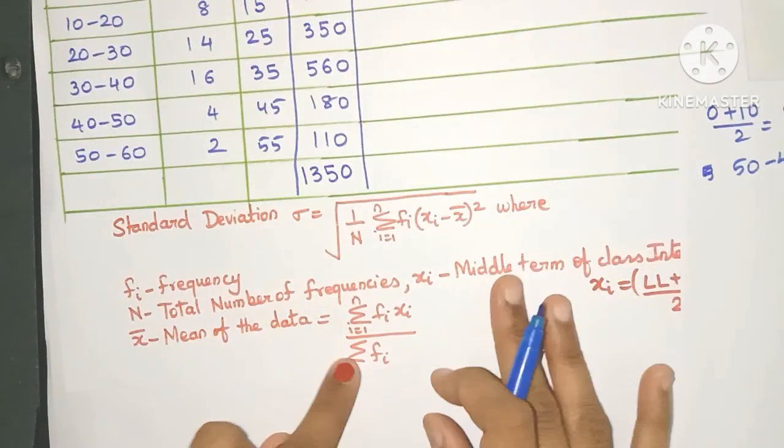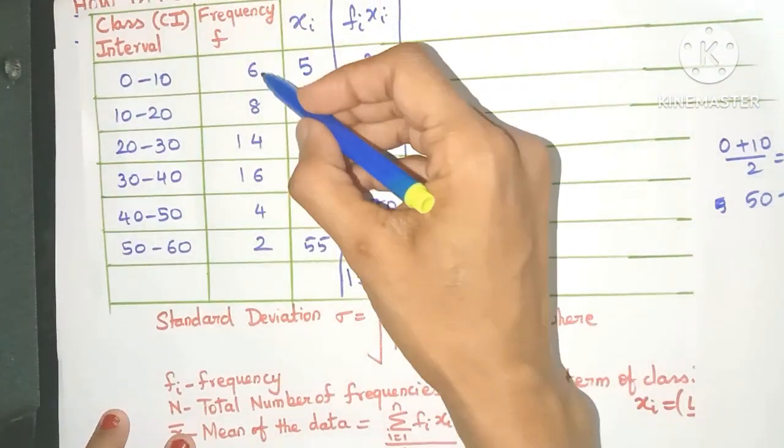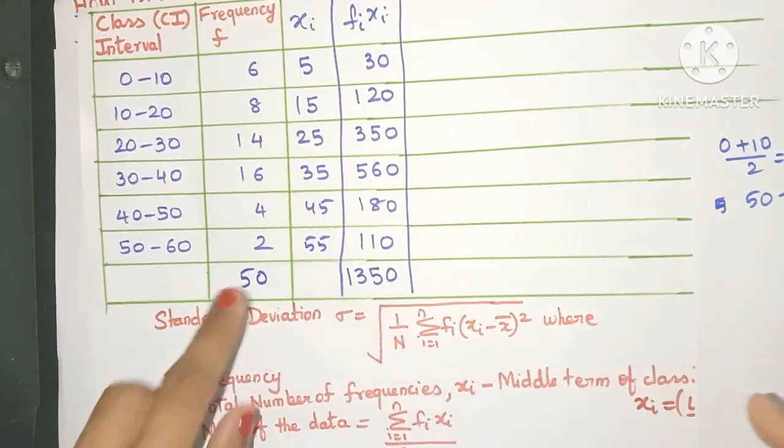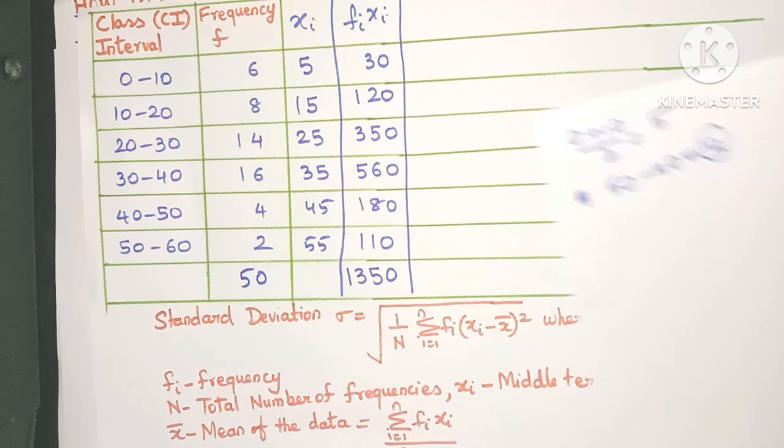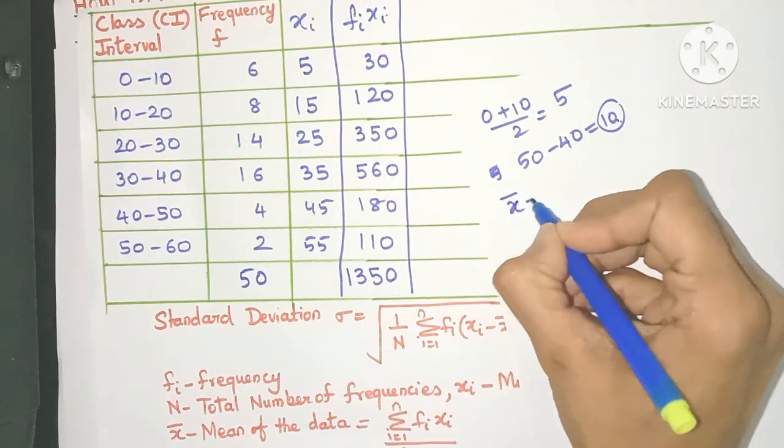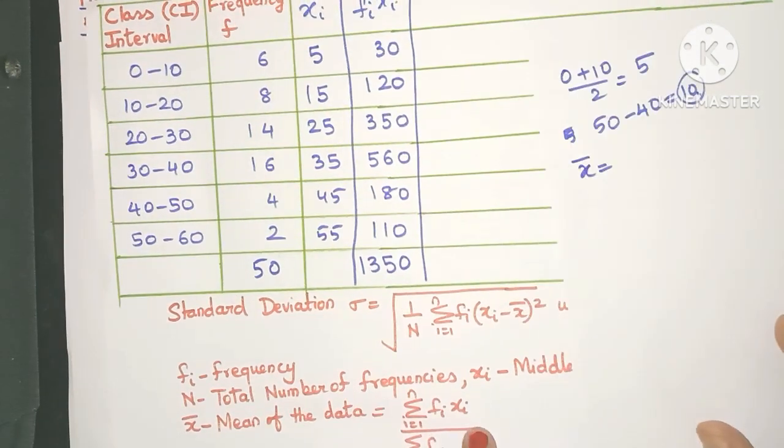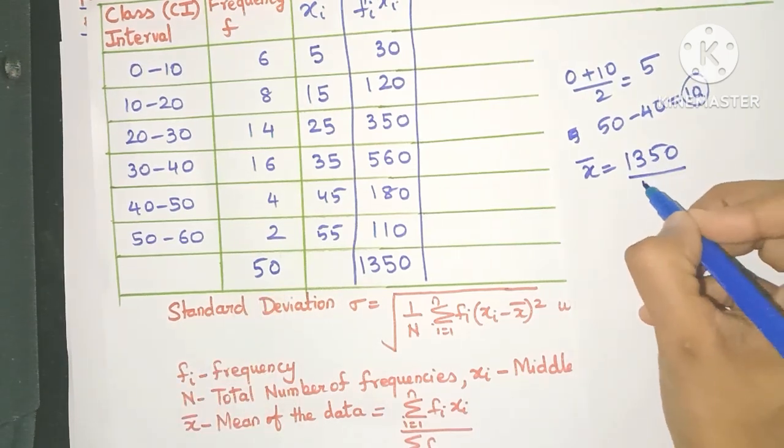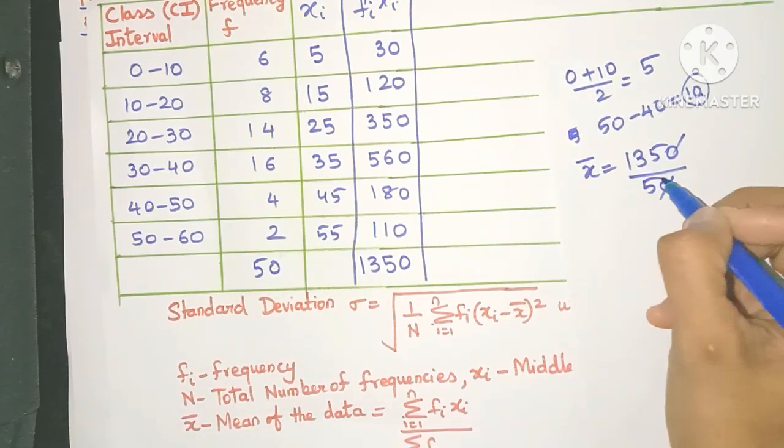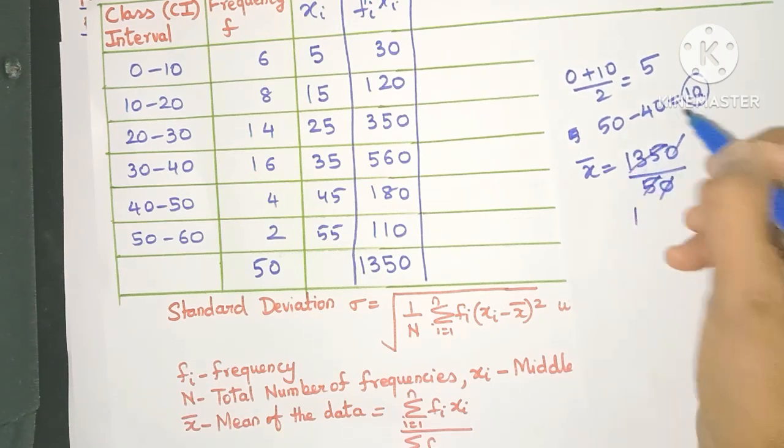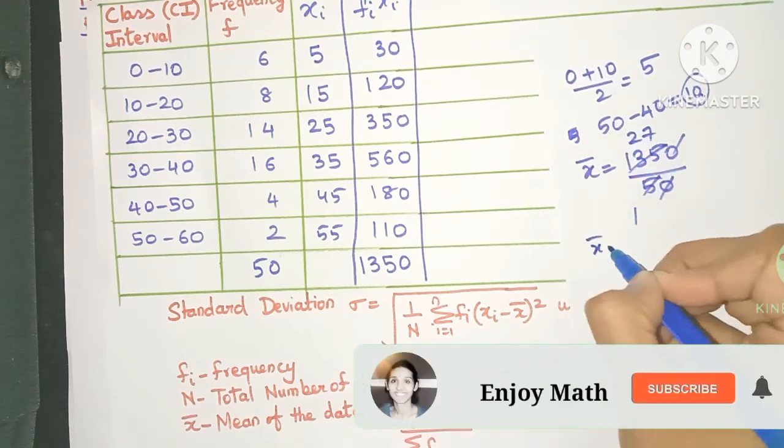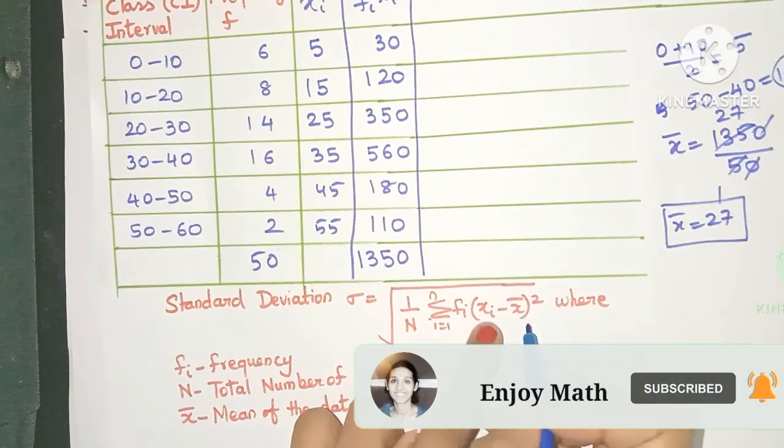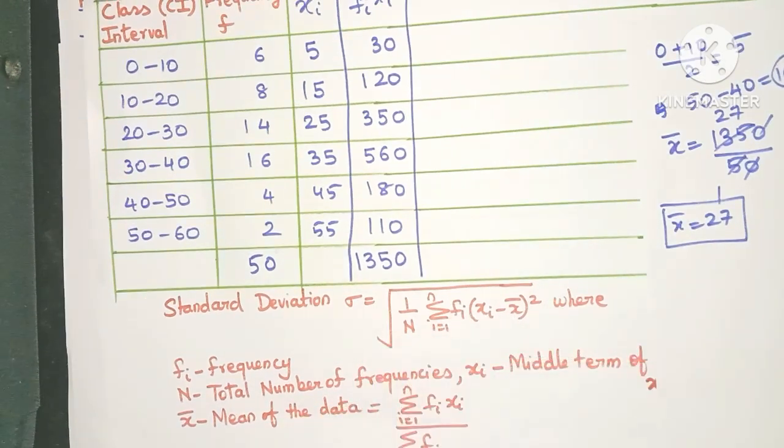Again, what is in the denominator? Sigma fi. So let's quickly find the total frequencies. Yes, it comes to 50. So now we can easily find the mean of this data, x bar, as sigma fi xi, which is 1350 divided by sigma fi, which is 50. So the zeros get cancelled. Yes, this will go five times. So the mean is going to be 27.